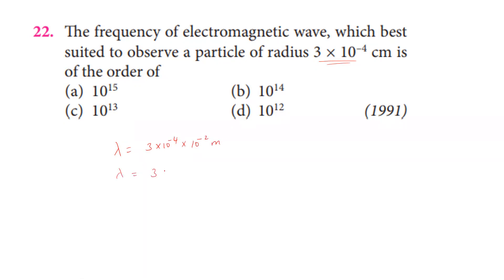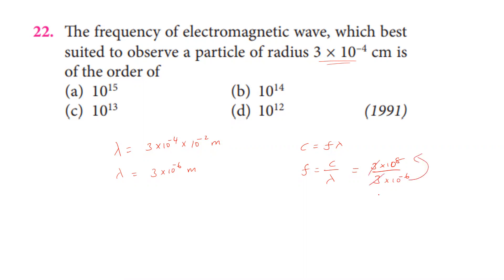The wavelength is equal to 3×10⁻⁶ meter. The speed of light equals frequency times wavelength, so frequency equals speed of the wave divided by wavelength. The speed of light is 3×10⁸ m/s divided by 3×10⁻⁶ m, giving frequency of the order of 10¹⁴ Hz. The second option is correct.